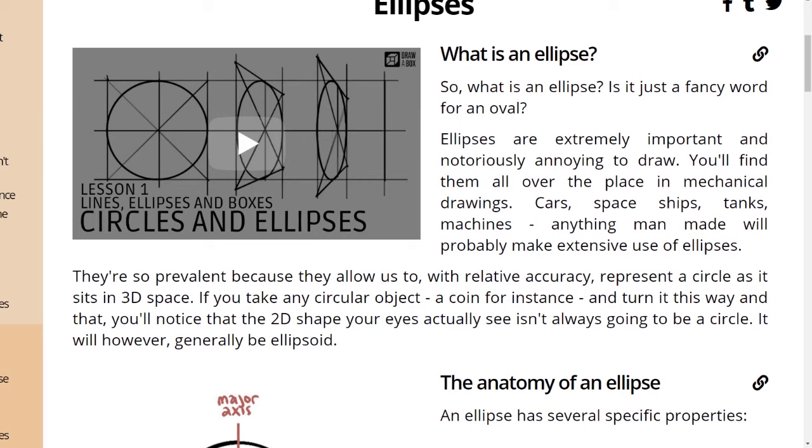They're so prevalent because they allow us to, with relative accuracy, represent a circle as it sits in 3D space. If you take any circular object, a coin for instance, and turn it this way and that, you'll notice that the 2D shape your eyes actually see isn't always going to be a circle. It will, however, generally be ellipsoid.